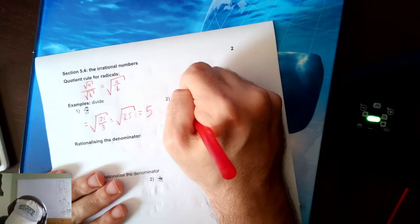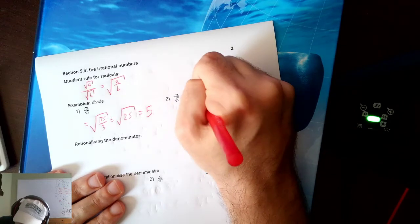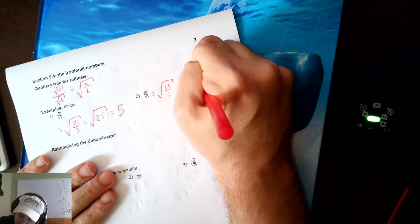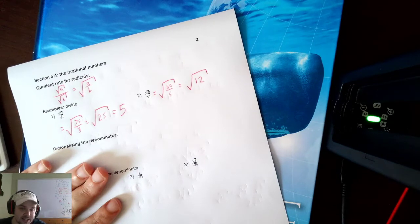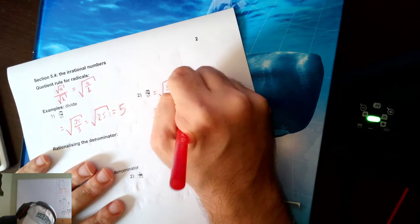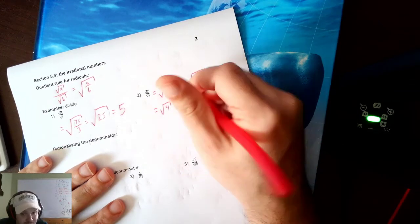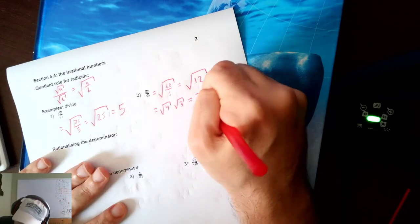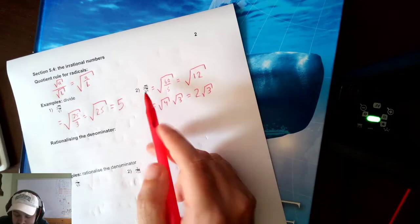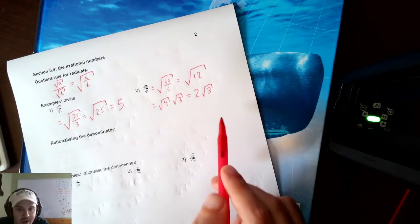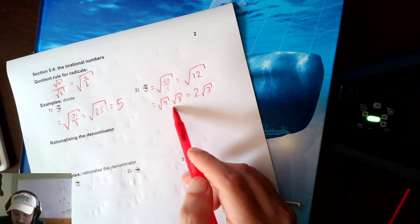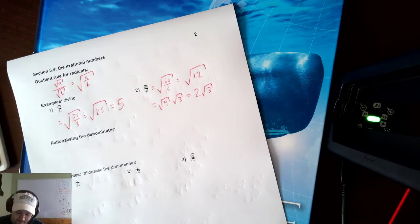Second example: square root of 60 over square root of 5 becomes square root of 60/5 = square root of 12. I should check if that reduces. Square root of 12 = square root of 4 times square root of 3 = 2 square root of 3. So the square root of 60 over the square root of 5 reduces to 2 square root of 3. Notice I'm using multiple rules — quotient rule, product rule — and always making sure to reduce.